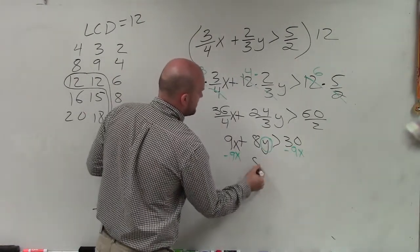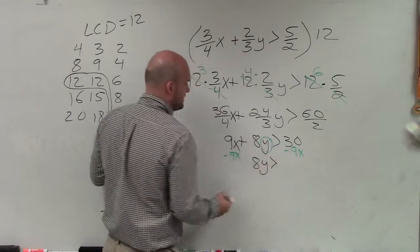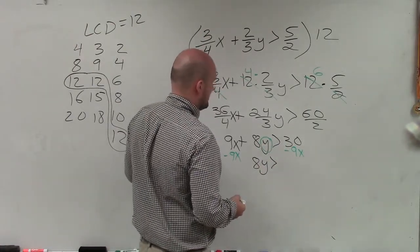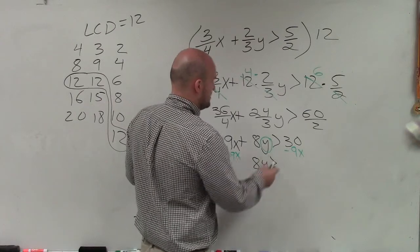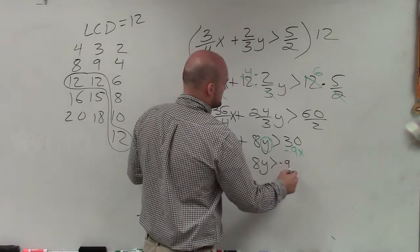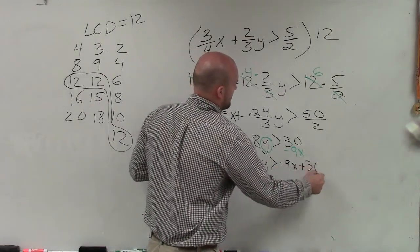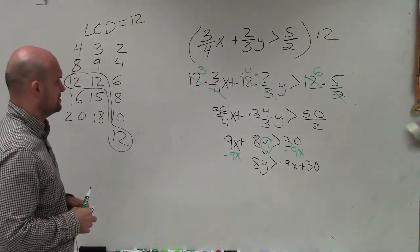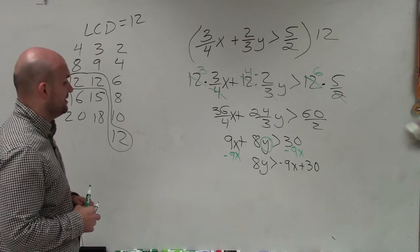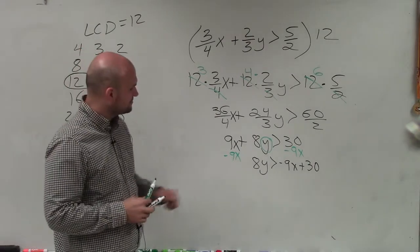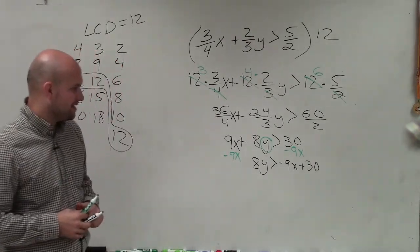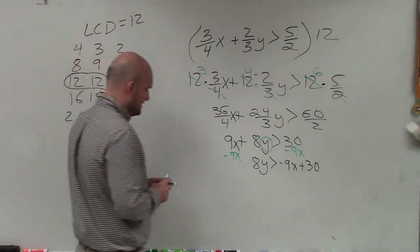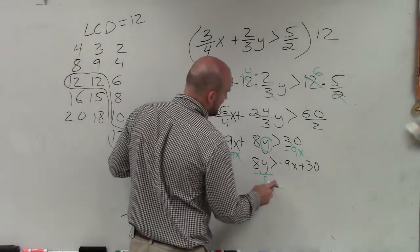So therefore, now I have 8y is greater than, ooh that doesn't look like fun, 8y is greater than negative 9x plus 30. I guess we'll do our best. 8y divided by 8. Now I see my variable being multiplied by 8, so I'm going to divide by 8.